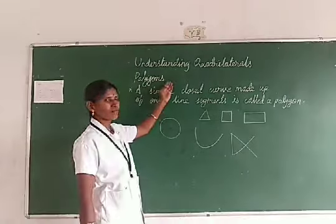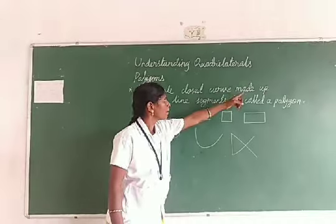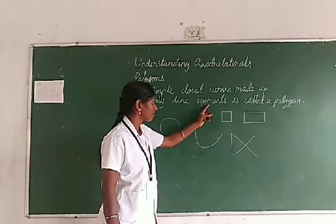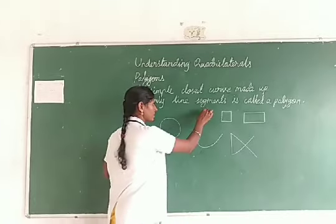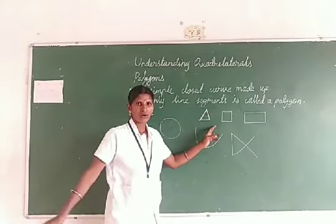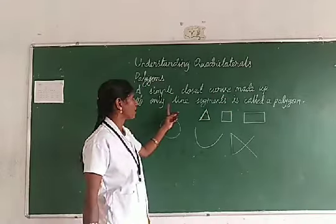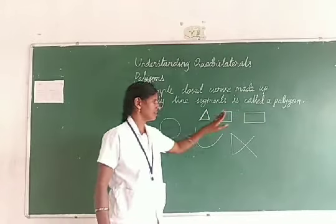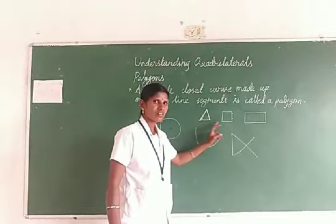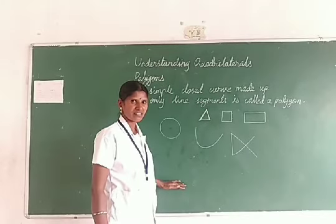So, polygons. A simple closed curve made up of only line segments is called a polygon. These are all polygons. But this is not a polygon. See here — triangle. If it has four sides, it is a square or rectangle. We are going to see the types of polygons.